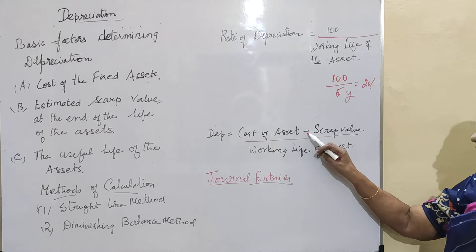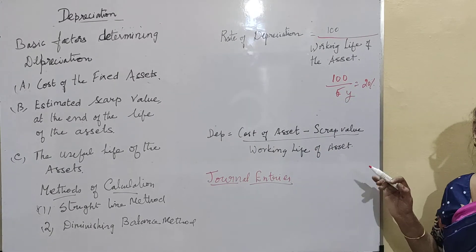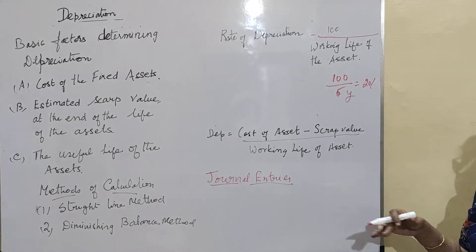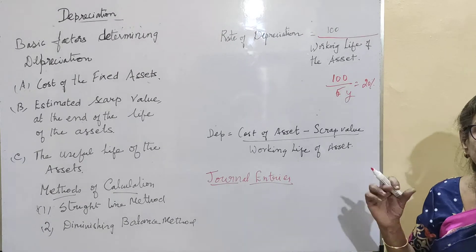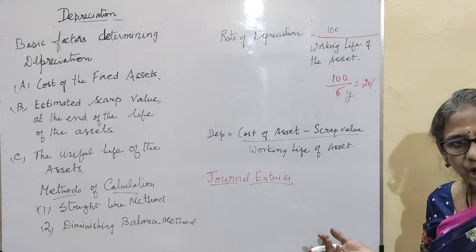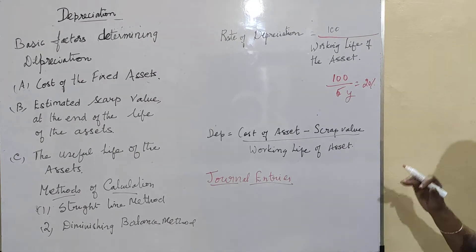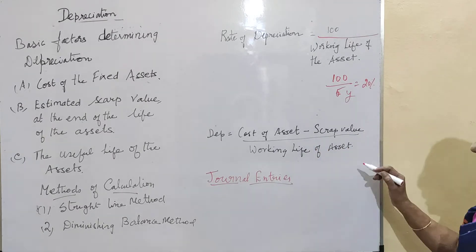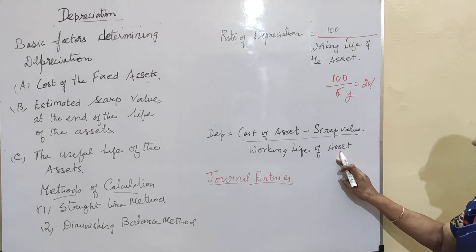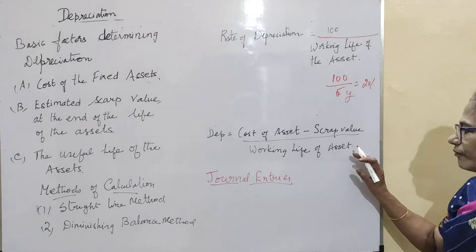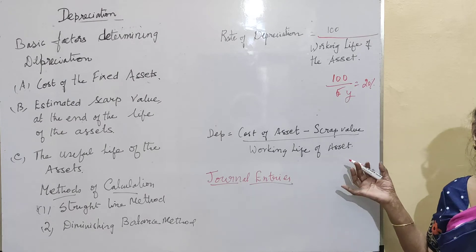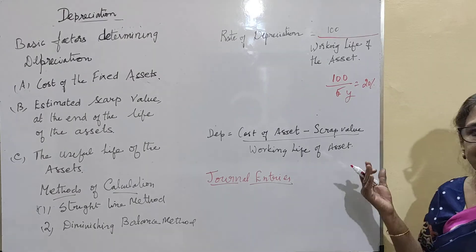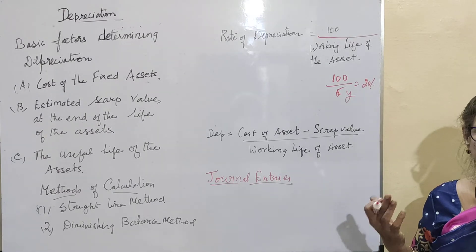The depreciation is calculated as the cost of the asset minus the scrap value. For example, if the cost of the asset is one lakh fifty thousand and the scrap value at the end of the working life is twenty thousand, then cost minus scrap value gives one lakh thirty thousand. That amount divided by the working life of five years gives the annual depreciation value.